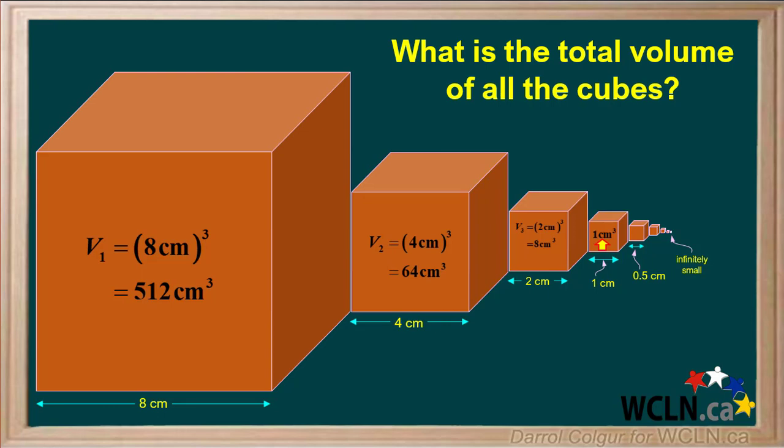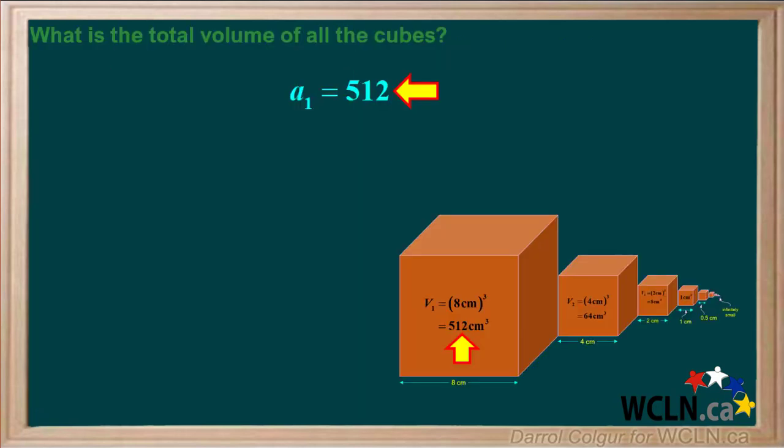Each subsequent cube would have 1/8 the volume of the previous one. The volumes of the cubes can be represented by an infinite series. The first term, A1, is the volume of the first cube, V1, which is 512. And the common ratio, R, is 64 over 512, which is 1/8.